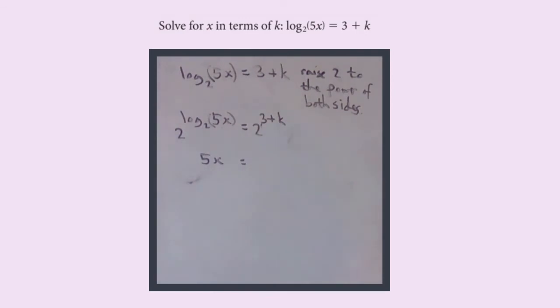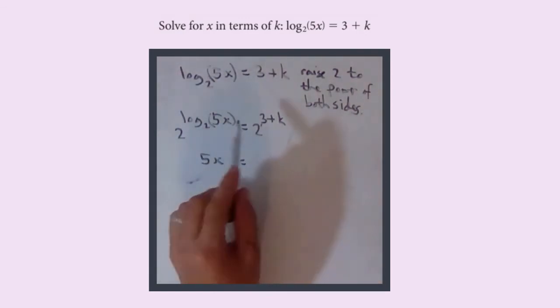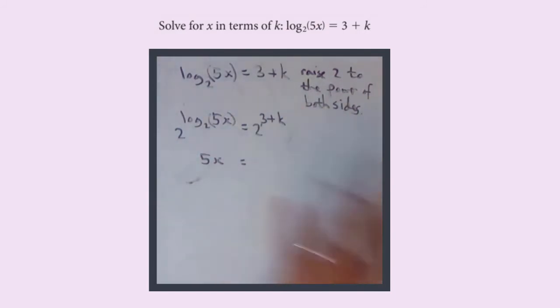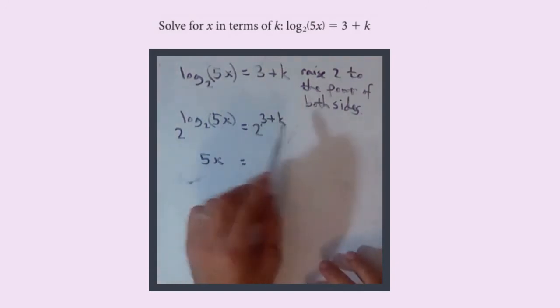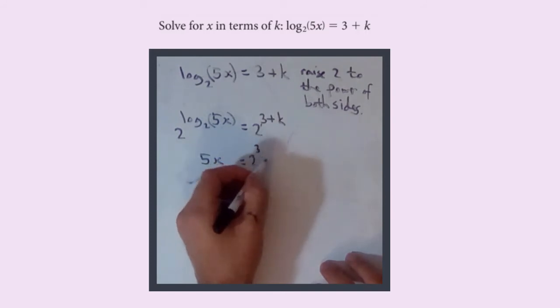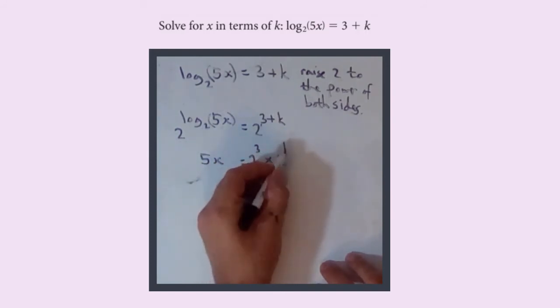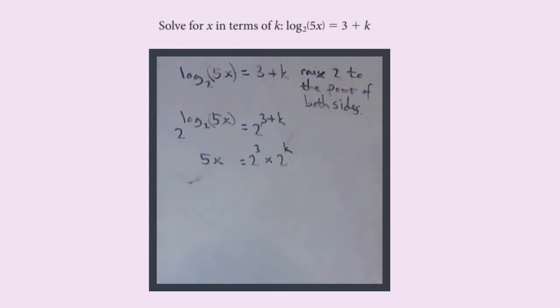Now, as I've said in a previous video, this 2 to the power of 3 plus k—you need to get used to this, you'll see it all over IB—we're going to write this as 2 to the 3 times 2 to the k.